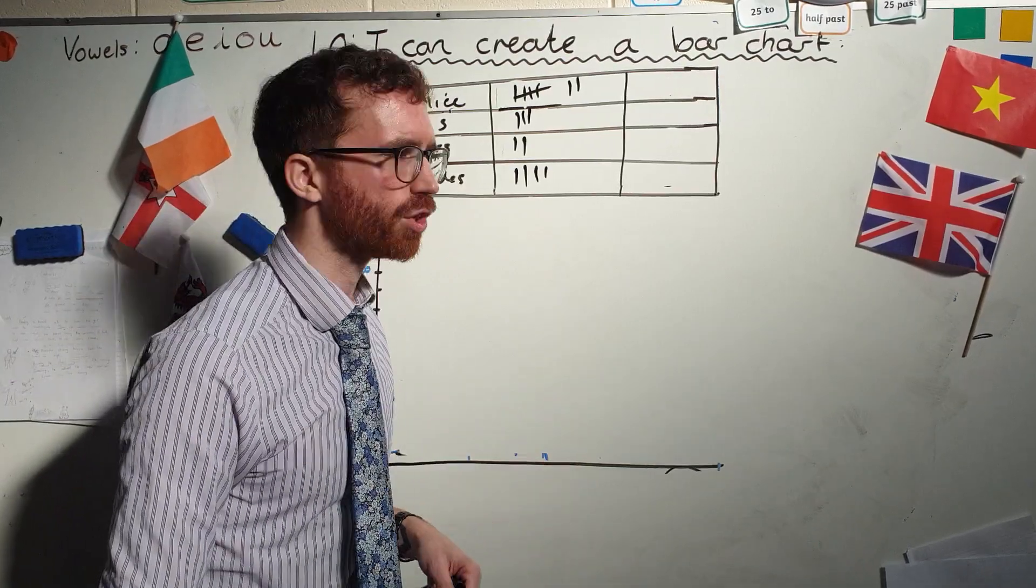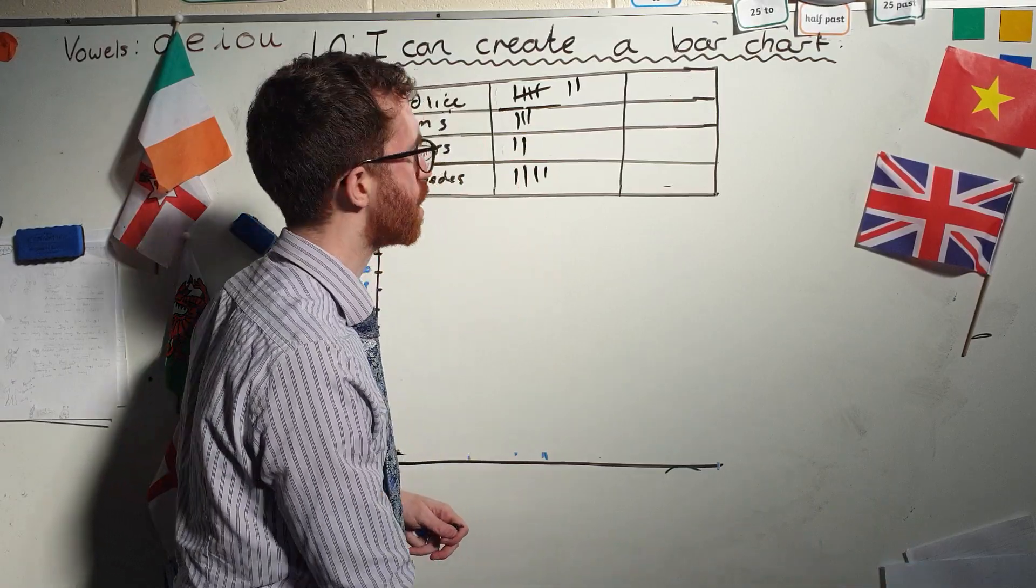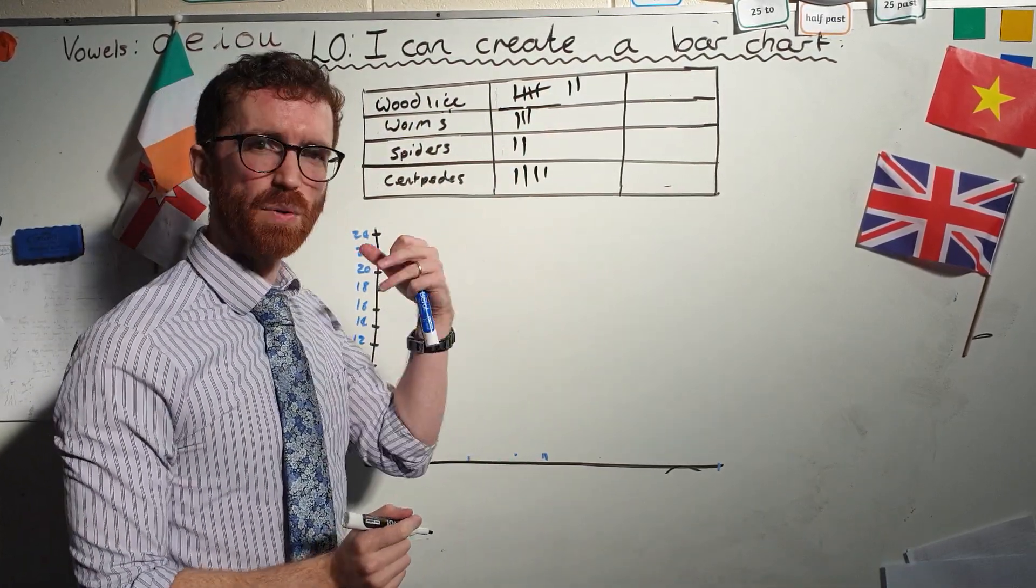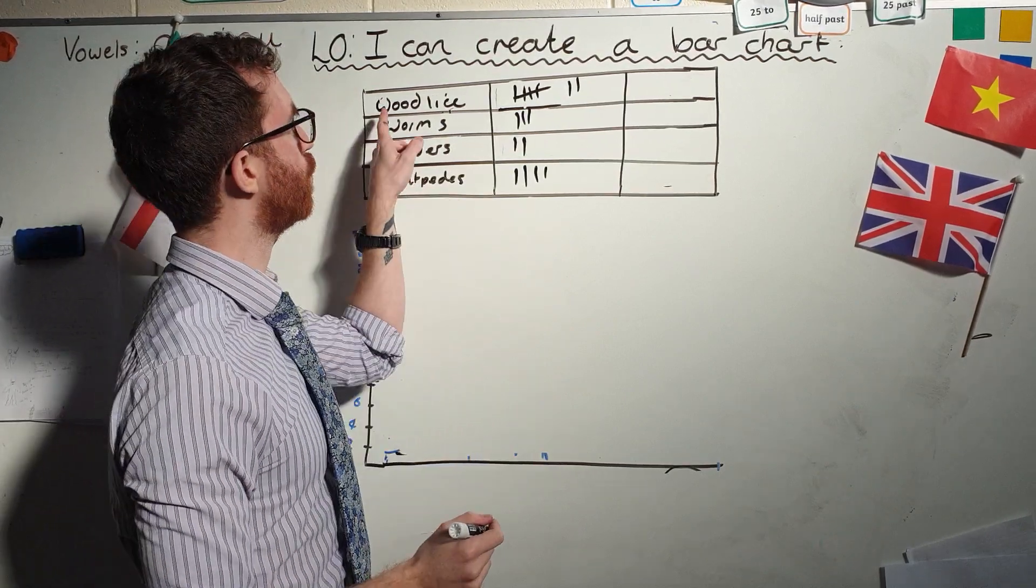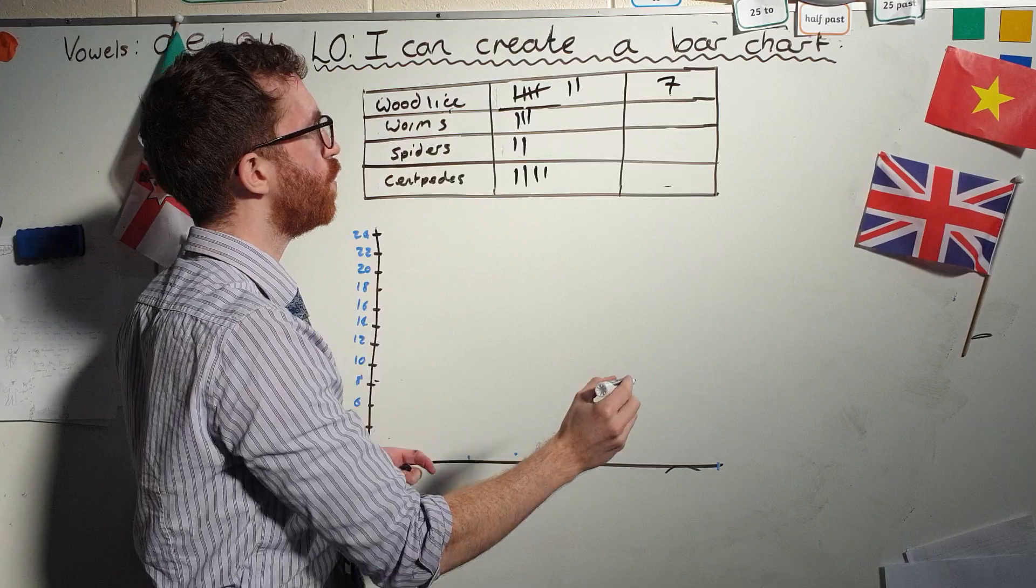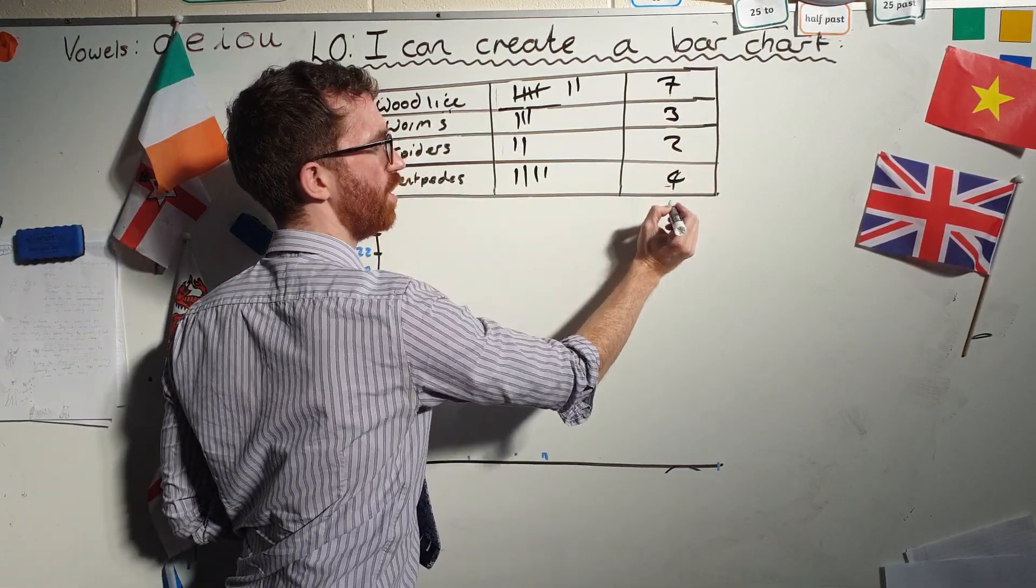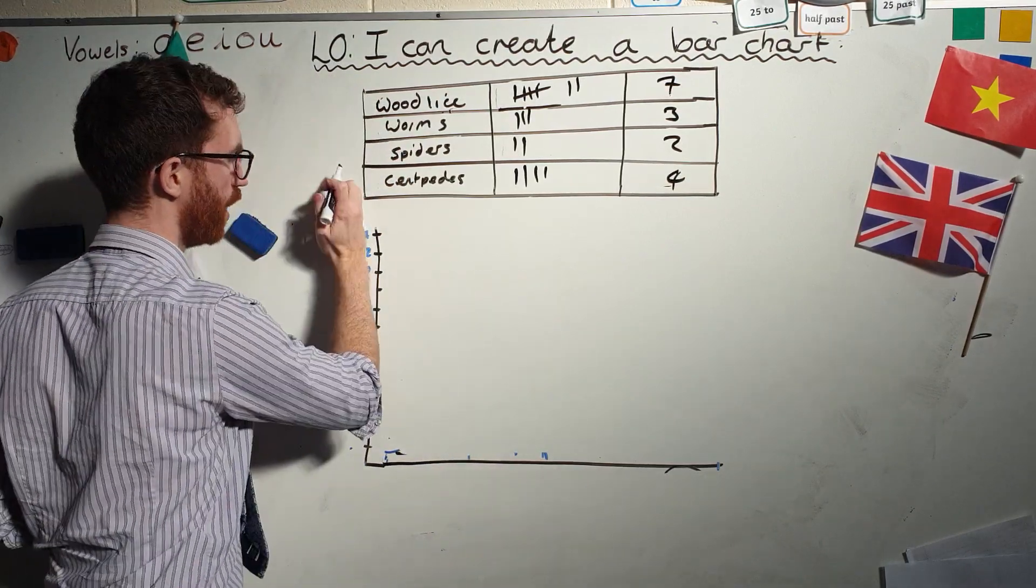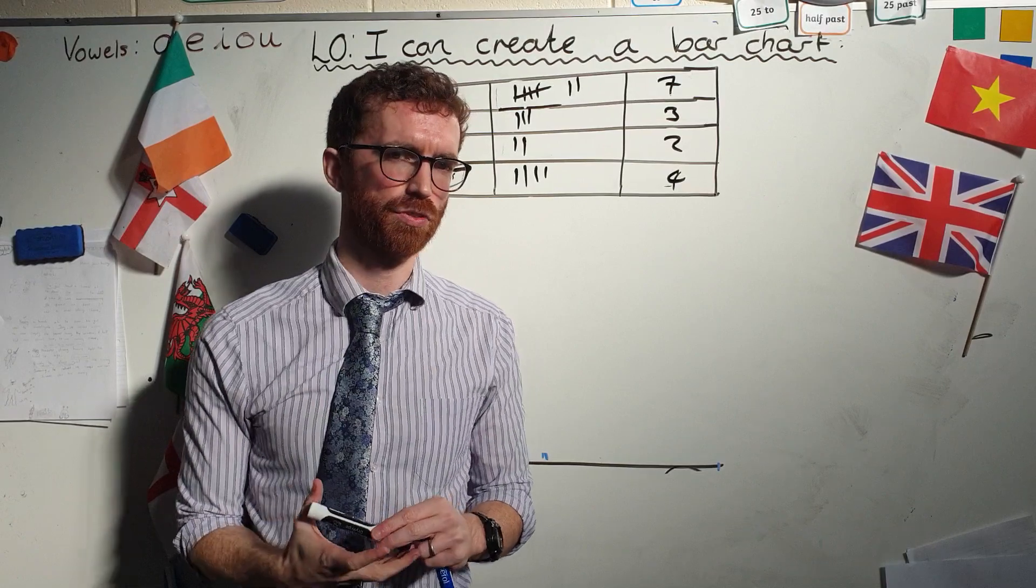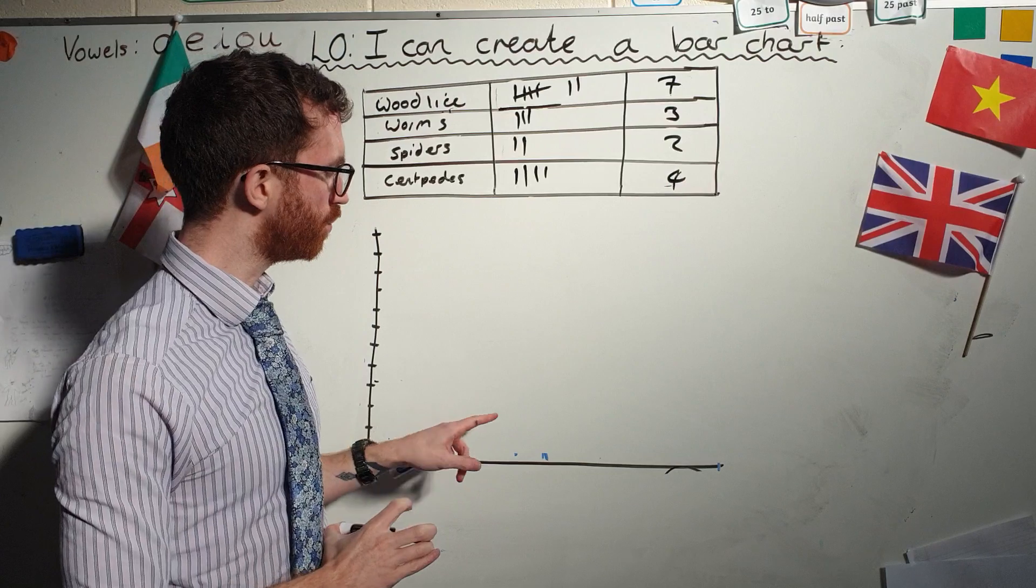Now as I was going along, the reason I didn't put the numbers in straight away is because I didn't actually know the answer yet. So each time I found something, I tallied it off on my tally chart here. Now what I can do is really easily just add up. So wood lice, how many were there all together? Five and two. There was seven. How many worms? I only found three. Spiders, two. Centipedes. Well, I only found four. Now I didn't find a lot of mini-beasts because I didn't have a lot of time to search for it. It doesn't matter because when you do yours later, you're going to have lots of things to search for.